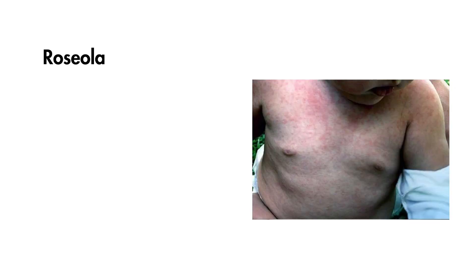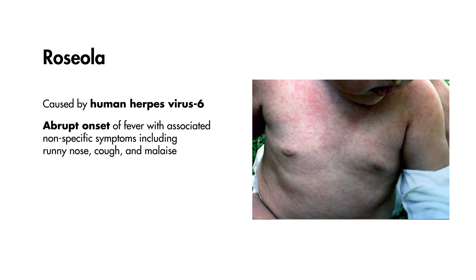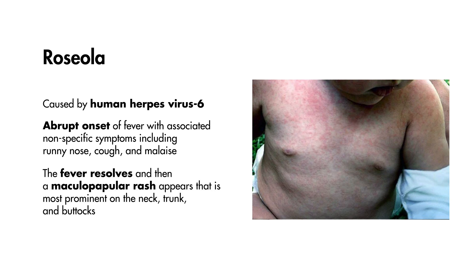Roseola is caused by human herpes virus 6. Classically, the child will have an abrupt onset of fever with associated nonspecific symptoms including runny nose, cough, and malaise. The fever resolves and then a maculopapular rash appears that is most prominent on the neck, trunk, and buttocks.